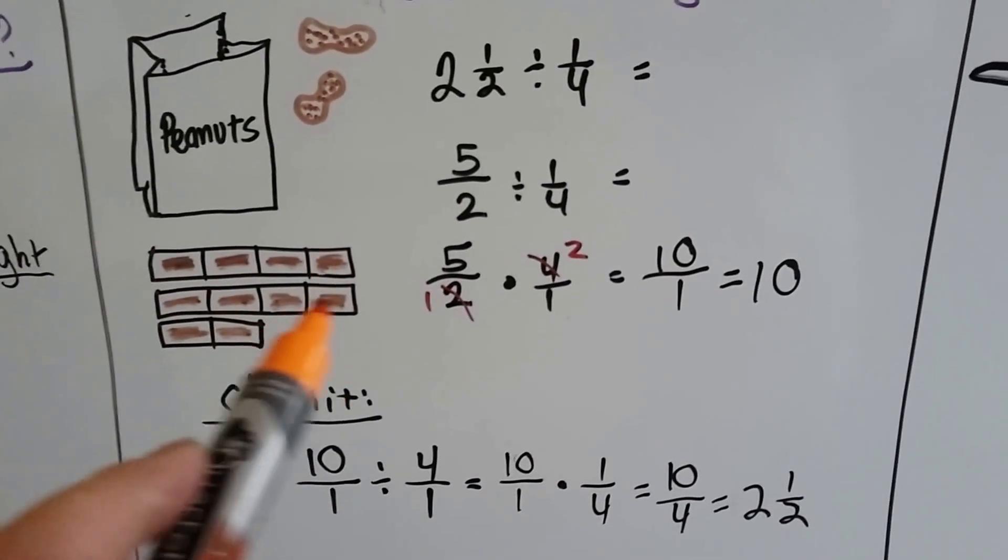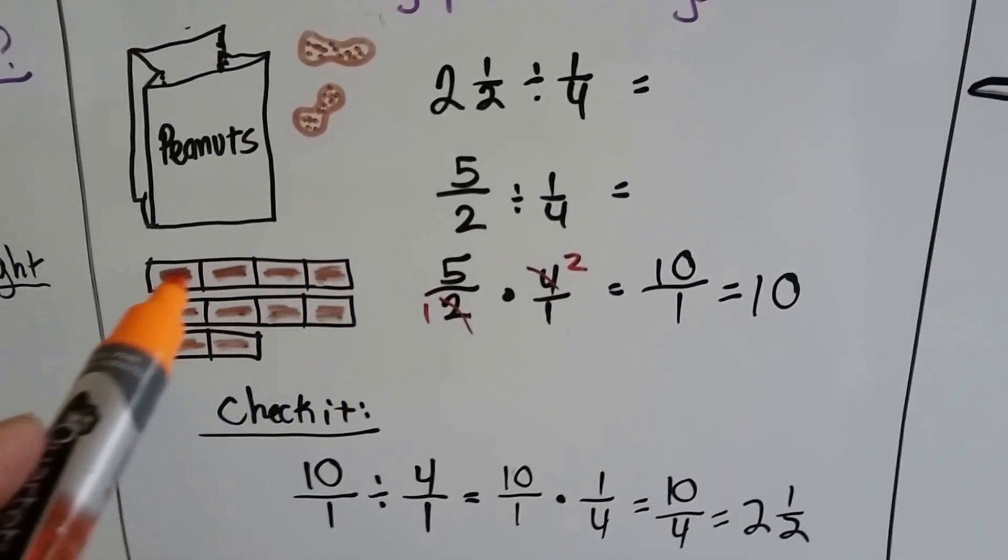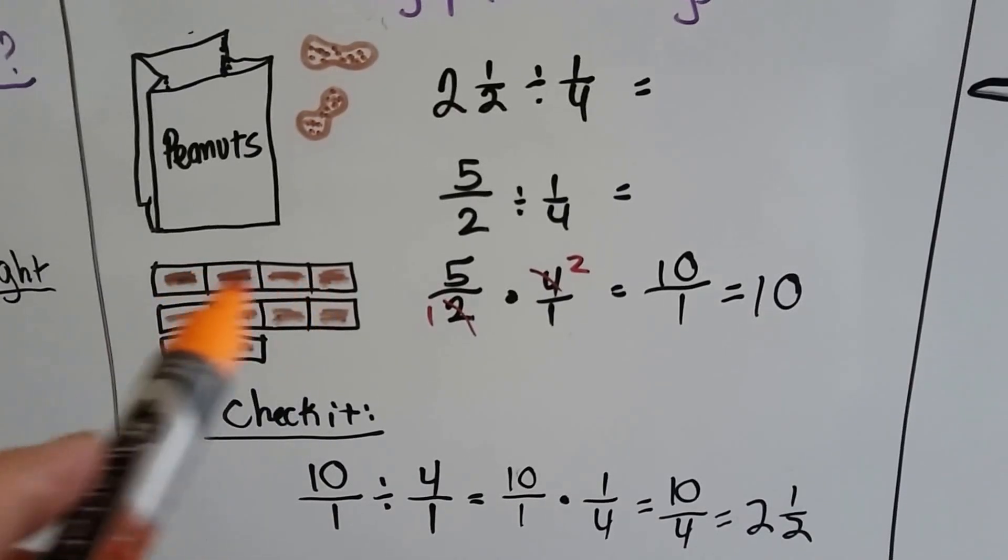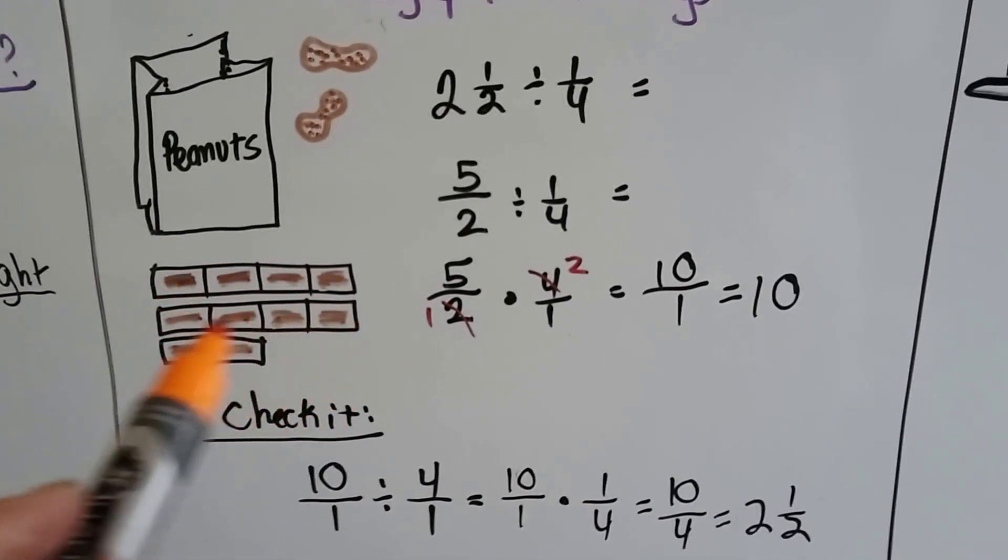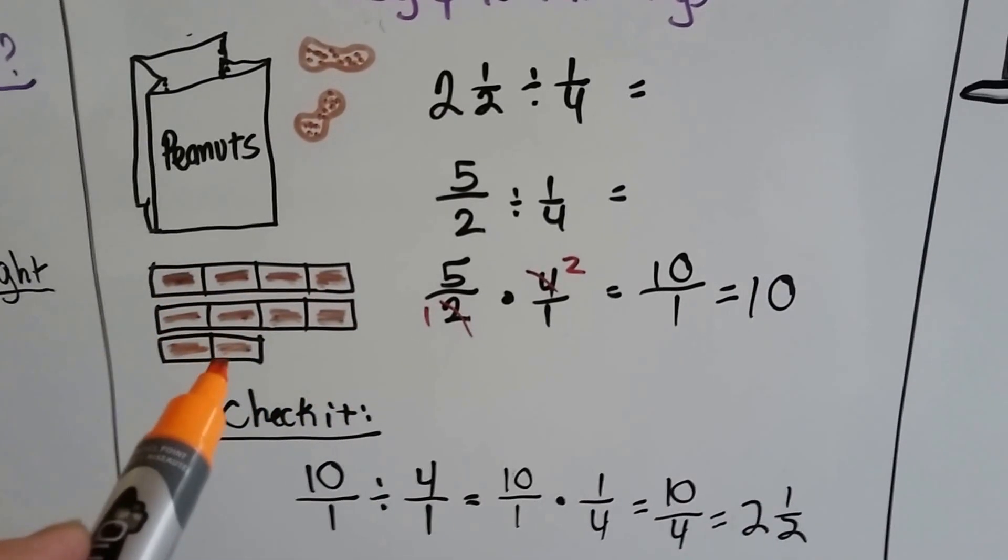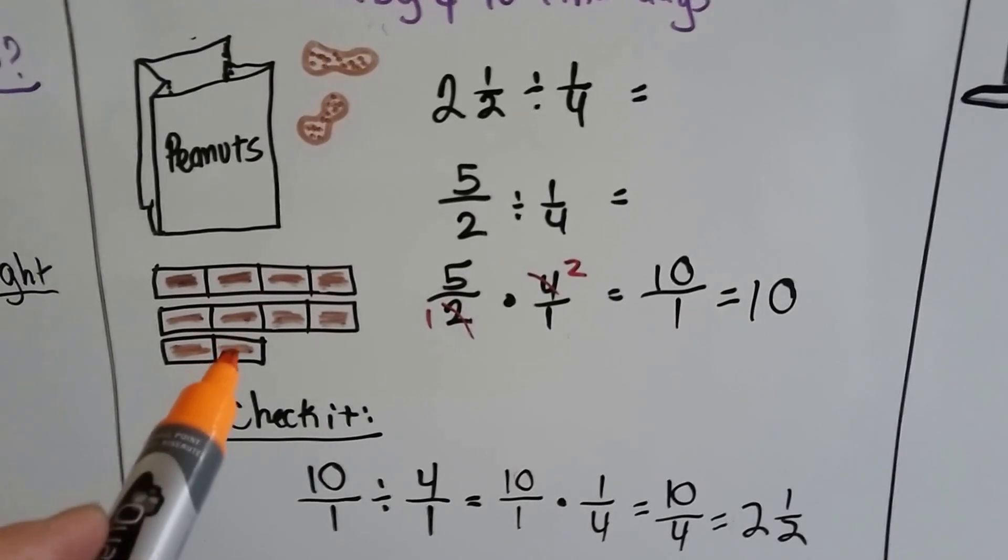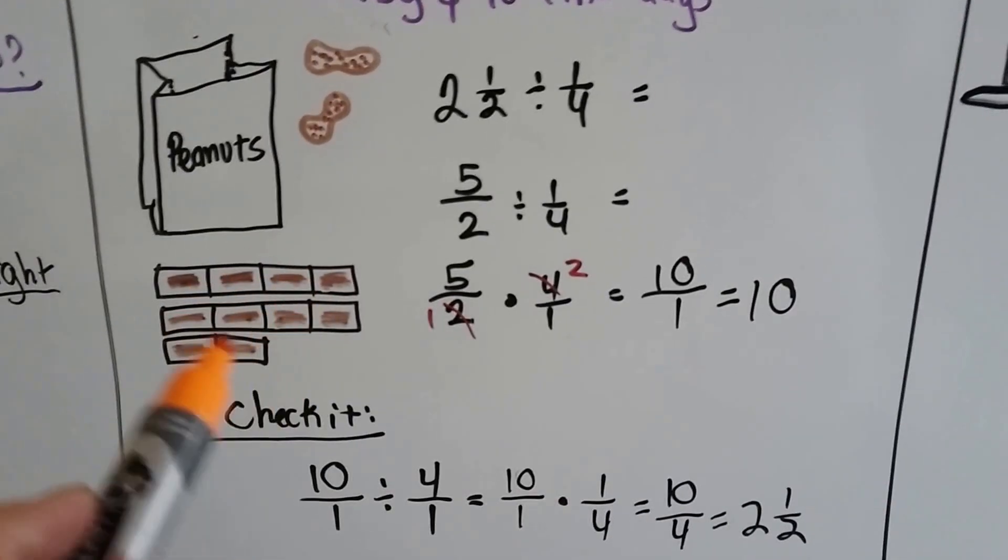If we had two and a half, and we split it into fourths, the first one split into fourths, the second one split into fourths, and then the half gets split into the fourth sizes, there's ten pieces. See? Ten.